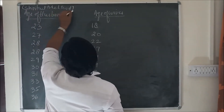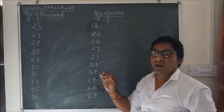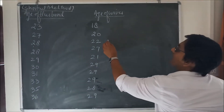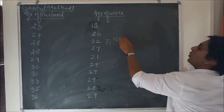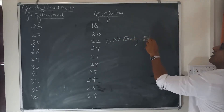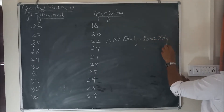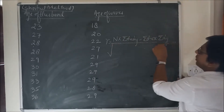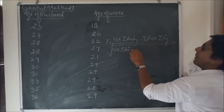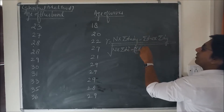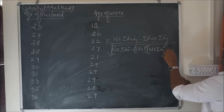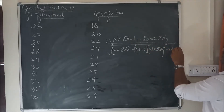First of all I write the formula for the calculation of Carl Pearson coefficient of correlation by shortcut method. The formula is: r equals n into sigma dx·dy minus sigma dx into sigma dy, upon whole under root of n into sigma dx squared minus sigma dx whole squared, bracket close, again bracket n into sigma dy squared minus sigma dy whole squared.